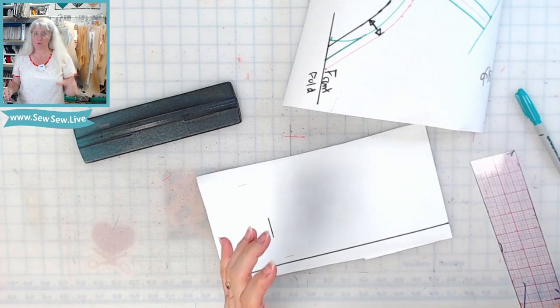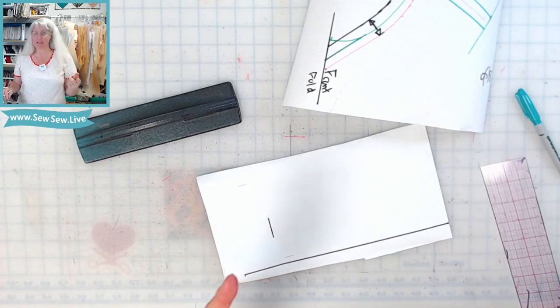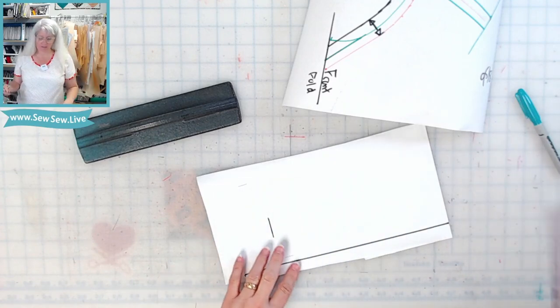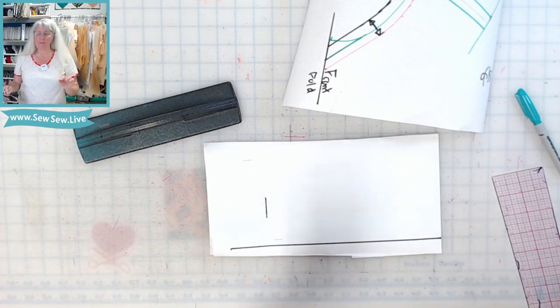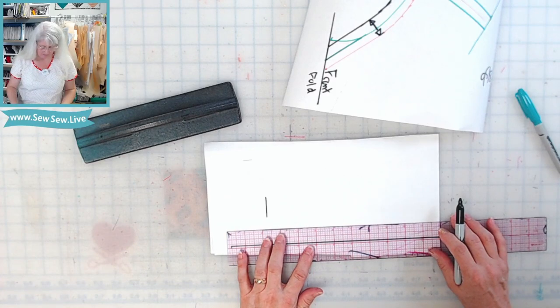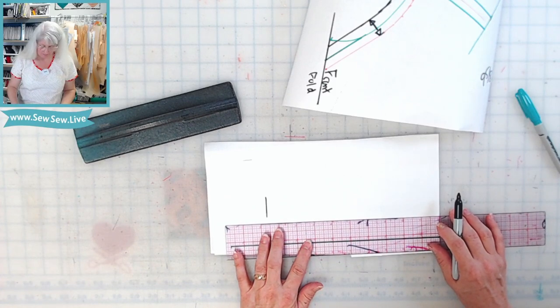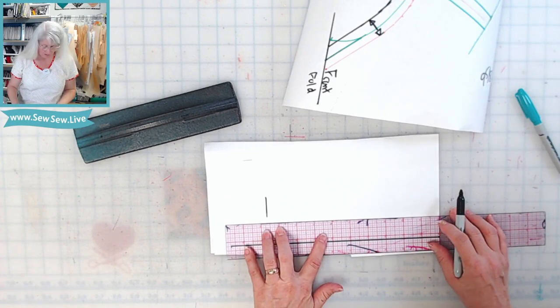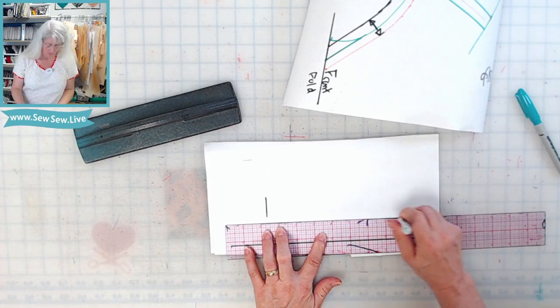Now we need to determine the width of our neckband. Like I said, mine is going to be seven eighths plus my seam allowance. And so I'm just going to add one half of my neckband right now. So I'm going to add the width, which is my seven eighths plus my seam allowance. So my line right here is one and a quarter inches wide.